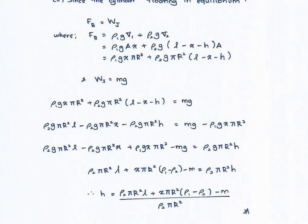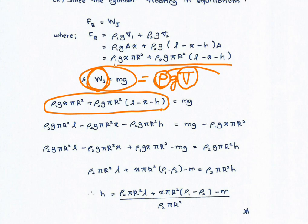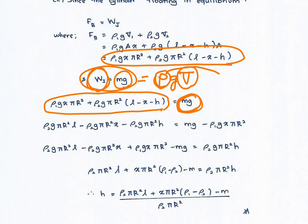We also need to calculate the weight of the object. The weight equals mg, or it can be calculated as rho times g times volume — where the density must be the density of the object and the volume is the total volume of the object. In this question, it is acceptable to leave the weight as mg, since the mass m is given as a parameter in the question.